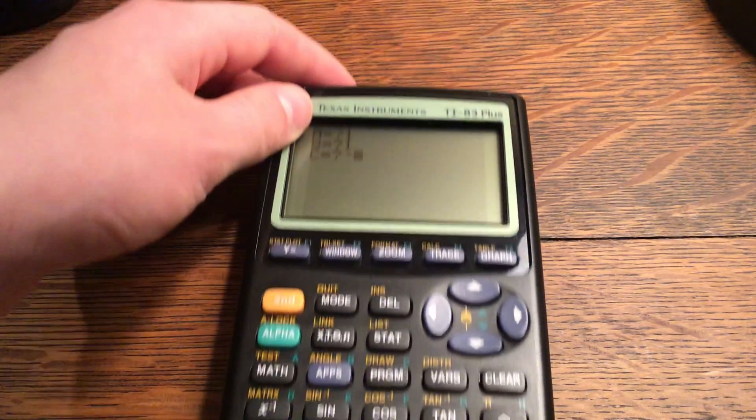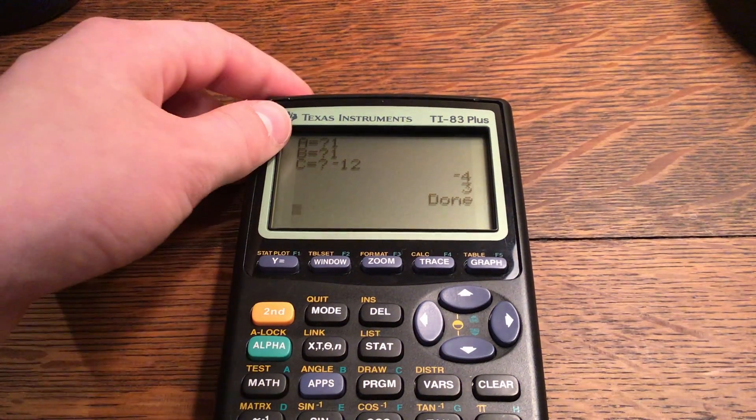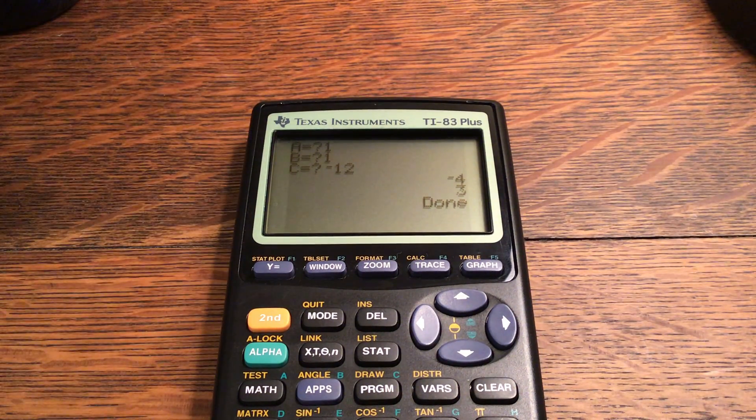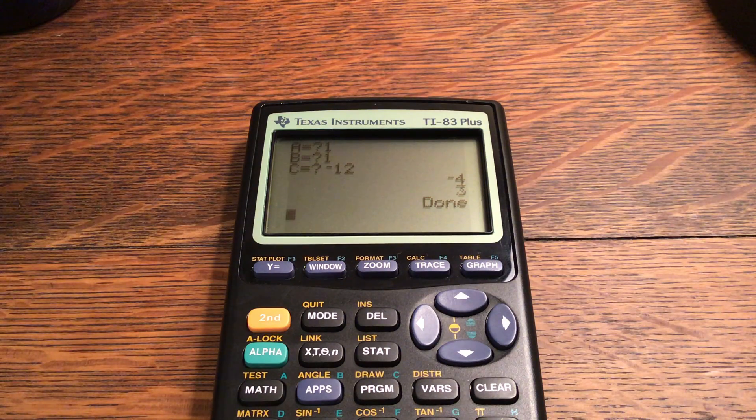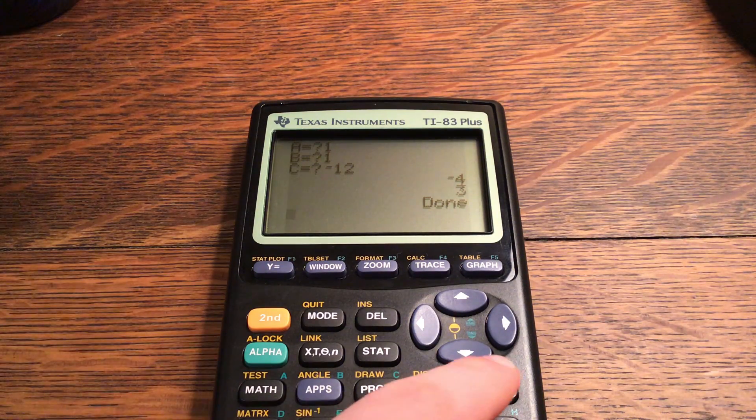You'd need to put in this thing right here, which is negative, and then 12. It will give you your roots of negative 4 and 3. That's how this program operates.